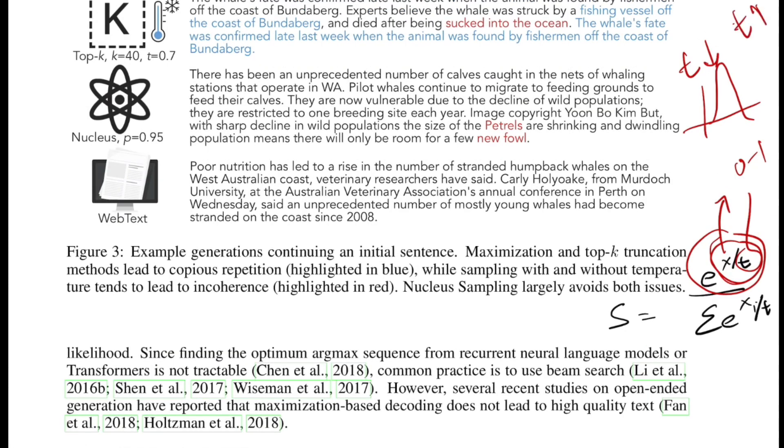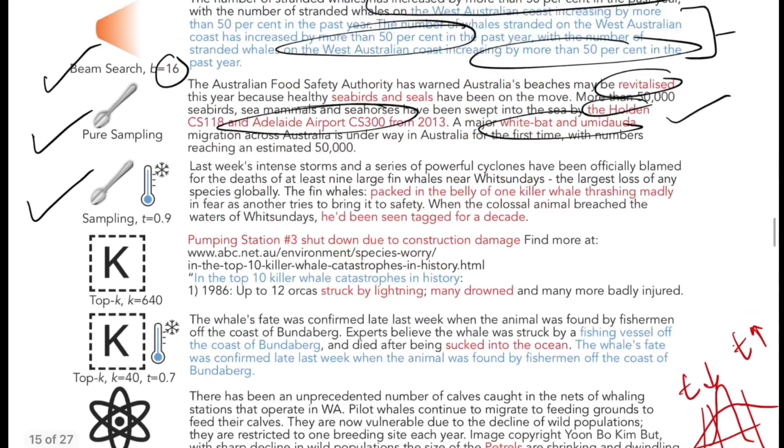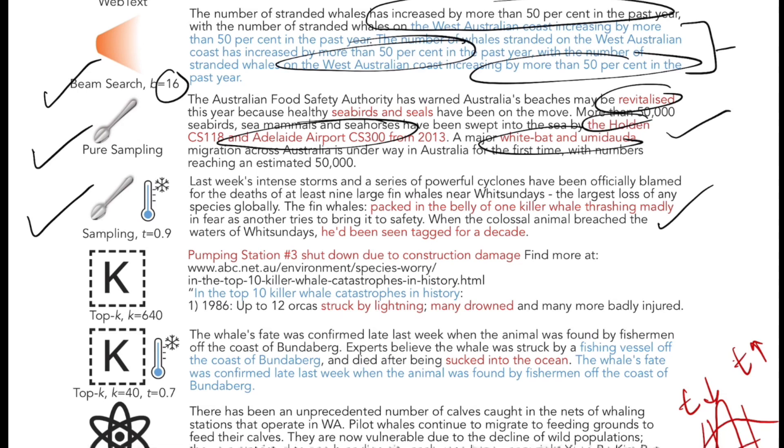This gives model improved generation quality because now you'll be sampling from that set of highly probable words. Whereas if you increase T, it creates a distribution that is flatter, hence the range of high probability words increases, which gives model more room for creating diverse sentences by picking diverse words.